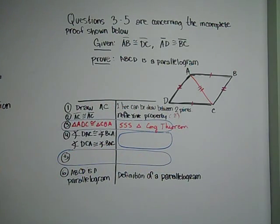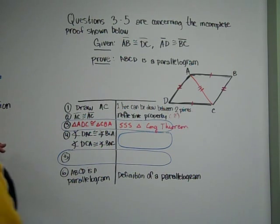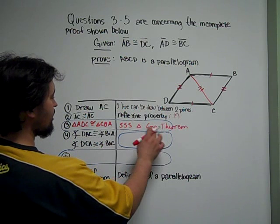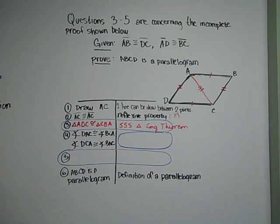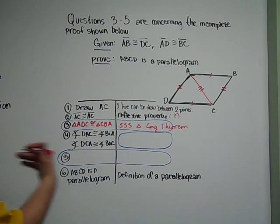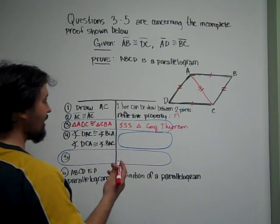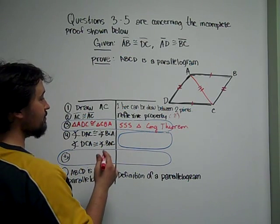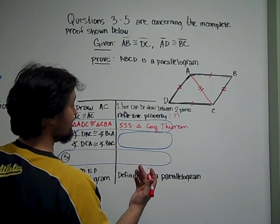You can also just write SSS theorem. The reason for proving triangles congruent is that once you prove the triangles are congruent, you can prove that any smaller part equals its corresponding part in the other triangle — known as CPCTC.